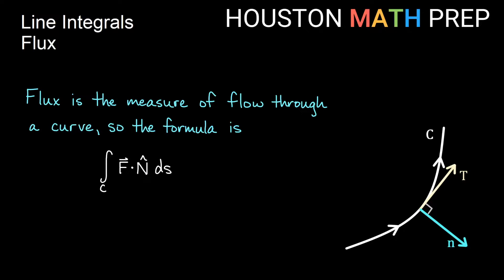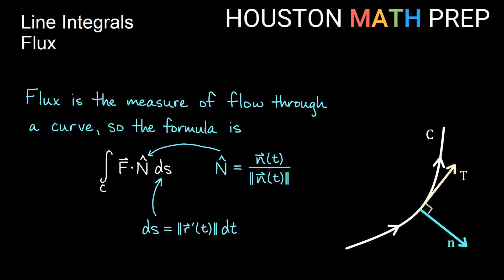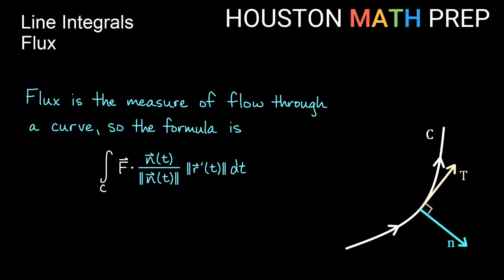Remember a couple of things about n-hat: n-hat is a unit vector pointing to the right as we go around the curve, divided by its own length since it's a unit vector. And ds is the magnitude of r prime of t dt from arc length. If we take both of these expressions and plug them into our integral, we get a nice expression because the magnitude of n(t) is the same as the magnitude of r prime of t, giving us F dot n dt.